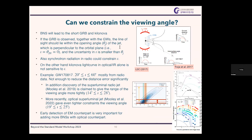Can we constrain the viewing angle? For GW170817, we have some constraints from light curves: after the neutron star merger, the brightness of the electromagnetic counterpart depends on the viewing angle, so measuring the light curve constrains it. We estimated the viewing angle from a paper we were involved in, though the uncertainty is still large. It is possible to constrain the viewing angle, but precisely constraining it is rather difficult.